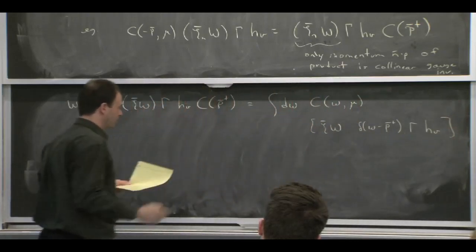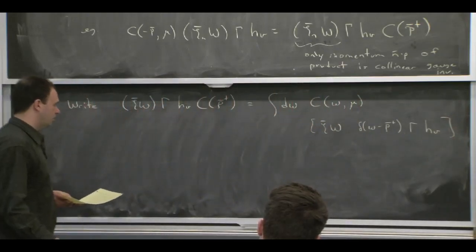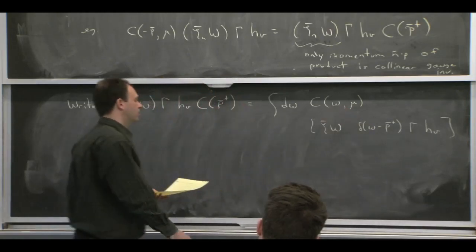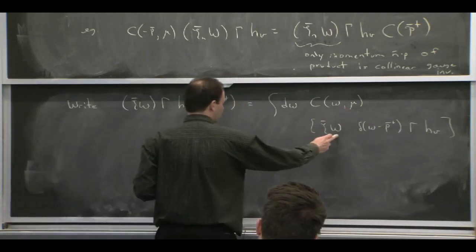OK, so if I do the integral over this omega, then I would just get back that I stick the p bar dagger inside the Wilson coefficient and that it acts on this product of fields.